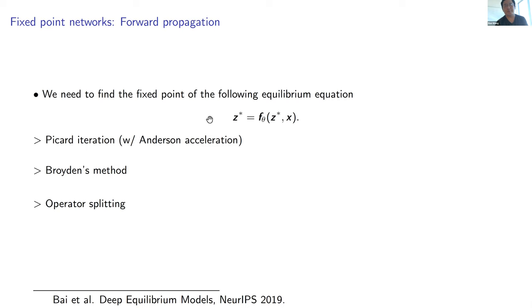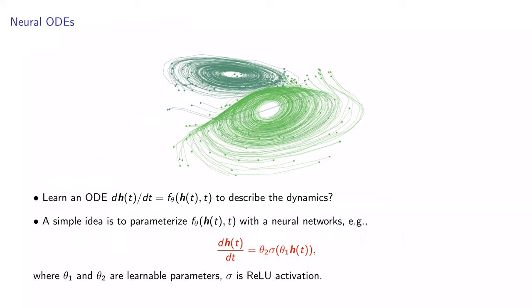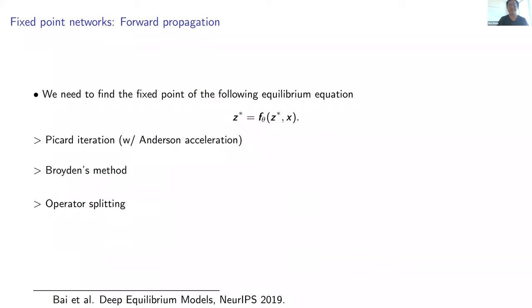For the fixed-point neural network, forward propagation just finds the equilibrium Z_star of F_theta(Z, X). Algorithms include Picard iteration, which is slow, Anderson acceleration, Newton's method for the nonlinear system, or operator splitting. For backward propagation, we need to compute the gradient partial L / partial theta = (partial L / partial Z_star)(partial Z_star / partial theta). Using implicit differentiation, computing partial Z_star / partial theta reduces to solving a system of linear equations, which can be handled efficiently with Krylov subspace methods like GMRES.